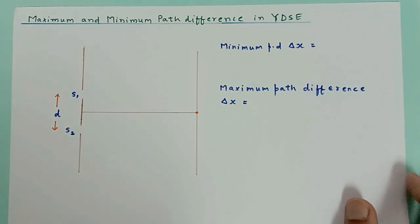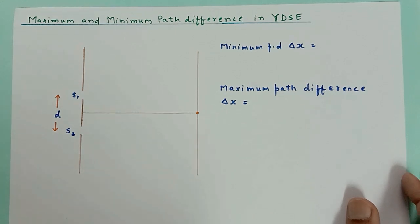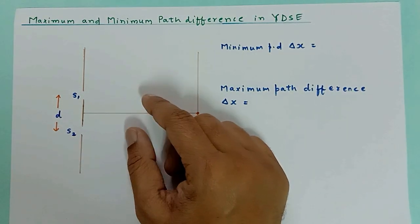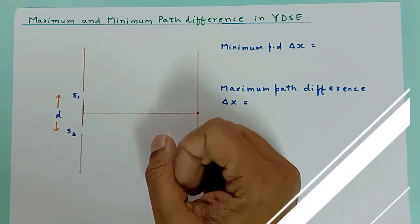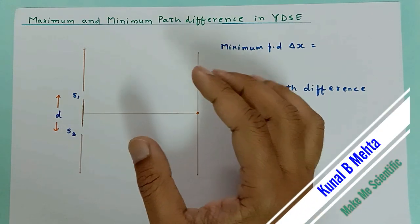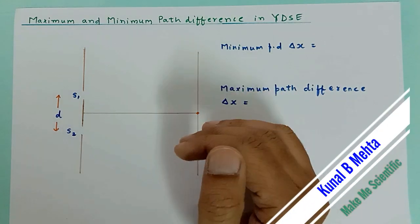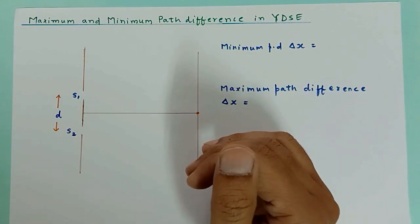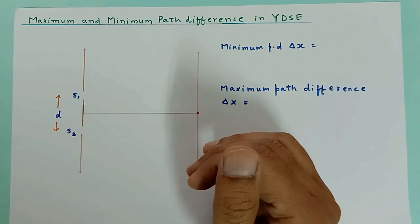Hello scientific genius people. We are continuing our discussion on the interference lecture series, and this is a continuation of maximum and minimum path difference in Young's double slit experiment.